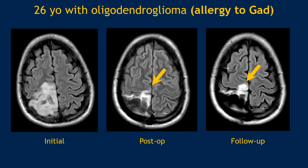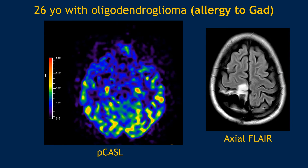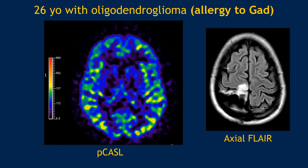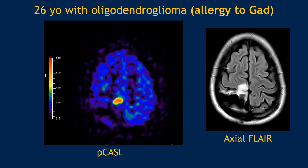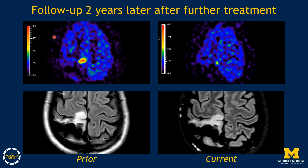This is a patient with a history of brain tumor who was allergic to gadolinium. They had an initial brain tumor that was resected, and immediately post-op there was a nice resection cavity with some T2/FLAIR signal. A few months later, there was new nodularity in the right paracentral lobule. We performed ASL, and this area of nodularity turned out to have very elevated perfusion. On the left is the initial imaging showing increased perfusion and nodularity, and two years later after treatment, that same nodular area has decreased in size with decreased perfusion, consistent with treatment response.